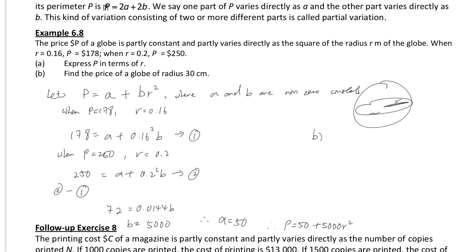Part b: when r equals 30 — bear in mind, this is in centimetres, but you can see r is in metres, so you change it to 0.3 metres. So P equals 500, because you substitute back into the formula.